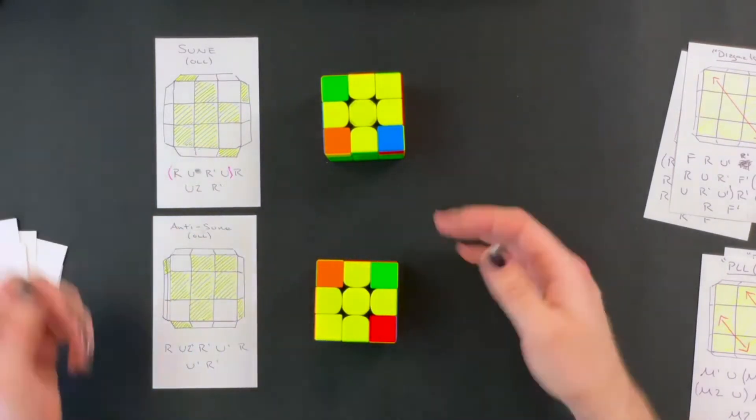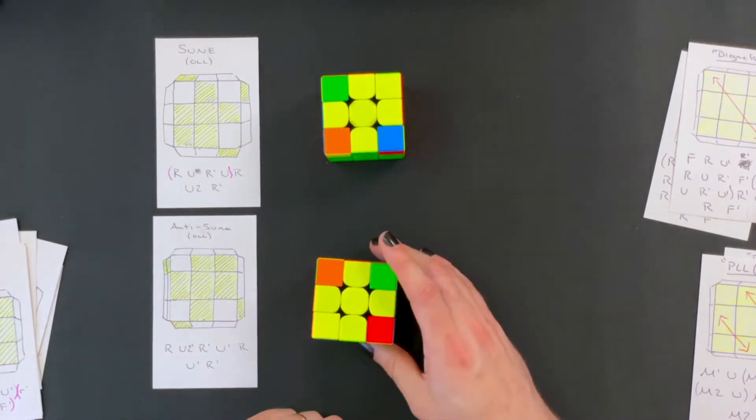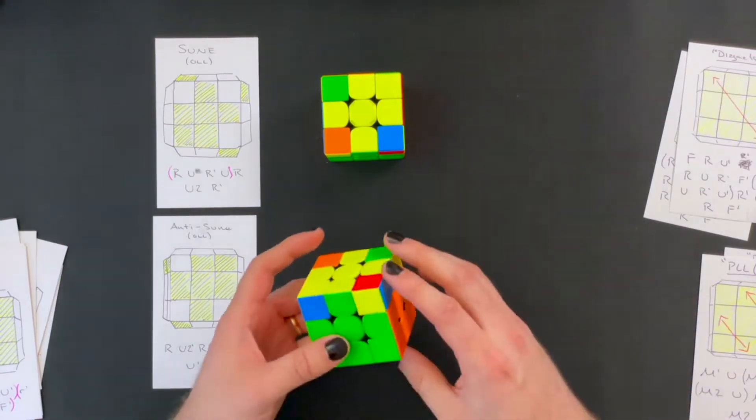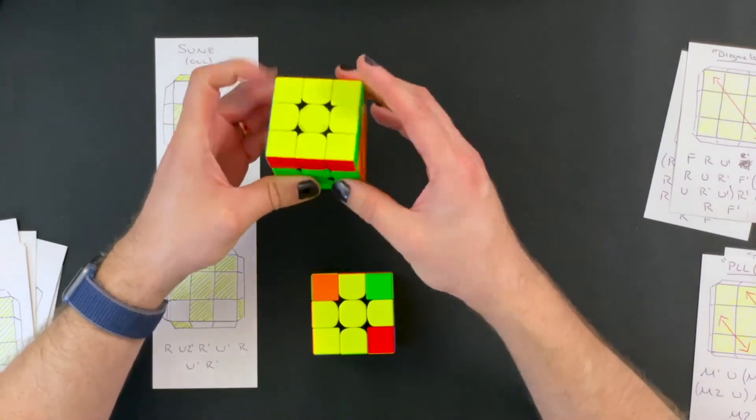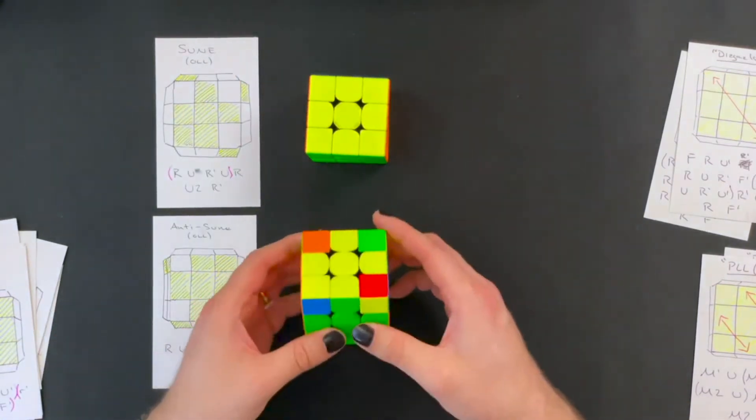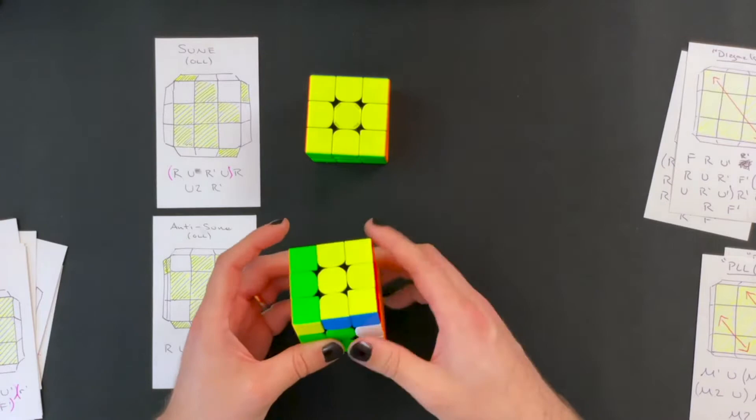So figuring that out I was able to kind of drill these algorithms and be able to recognize the other case. So here I'm doing anti-sune to get back to the solved cube as demonstration and here I'm doing sune on the other cube to get back to a solved cube.